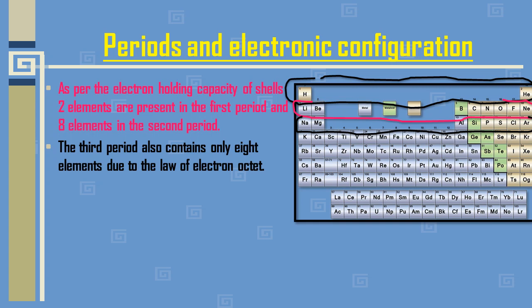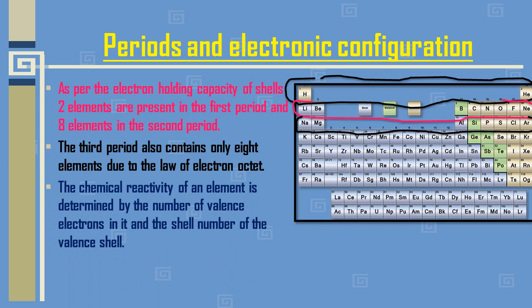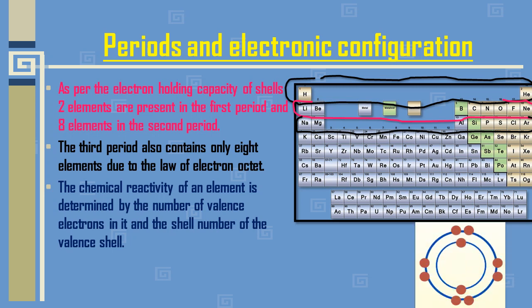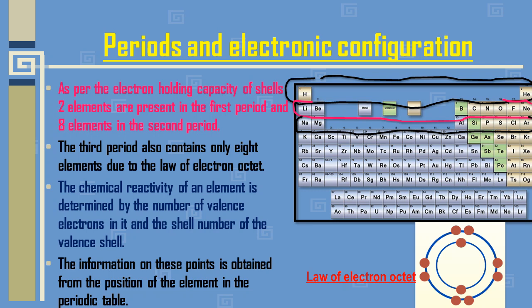The third period contains only eight elements due to the law of octet — the last shell can contain a maximum of eight electrons. The chemical reactivity of an element is determined by the number of valence electrons, which are the electrons in the outermost shell. The modern periodic table has proved useful for the study of elements from atomic number 1 up to 118.